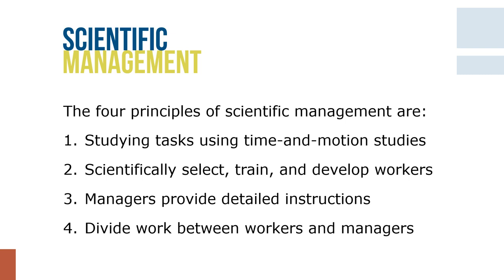The four principles of Taylor's scientific management are the following. First, replace rule-of-thumb work methods with methods based on scientifically studying the tasks using time and motion studies. Second, scientifically select, train, and develop all workers rather than leaving them to passively train themselves. Third, managers provide detailed instructions and supervision to workers to ensure that they are following the scientifically developed methods. Fourth, divide work nearly equally between workers and managers.